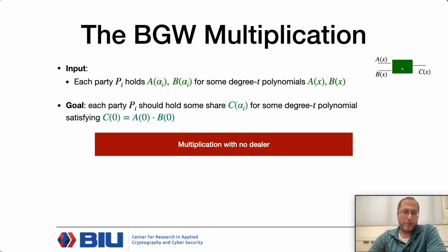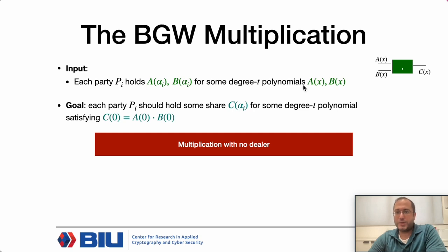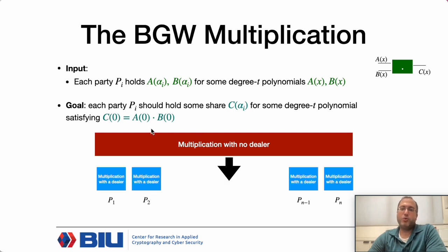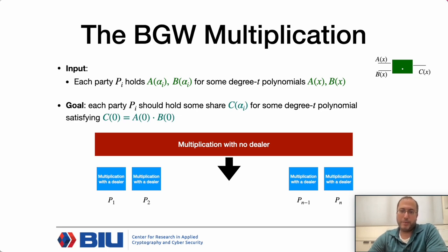The BGW protocol shows how to reduce multiplication with no dealer—where no party knows A, B, and C—to n executions of the same building block: multiplication with a dealer, where there is a party that knows A, B, and C.